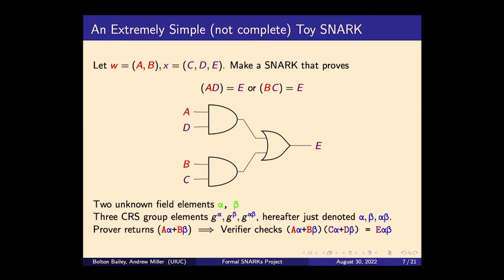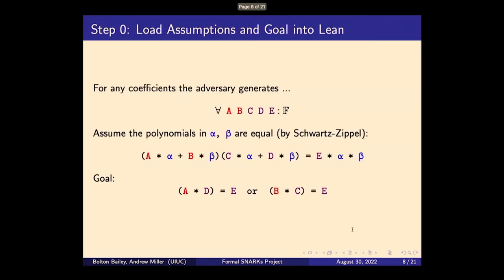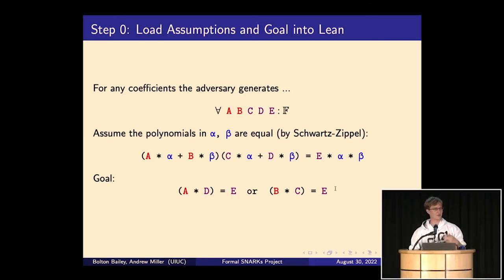So the step zero of the automation process is to load this assumption into Lean. For any coefficients the adversary generates, we have: for all A, B, C, D, E which are field elements, (A*alpha + B*beta) * (C*alpha + D*beta) = E*alpha*beta. That is the assumption. The goal we want to prove is: A*D = E or B*C = E. When you boil out the model assumptions, it becomes a very simple problem of working with multivariable polynomials.